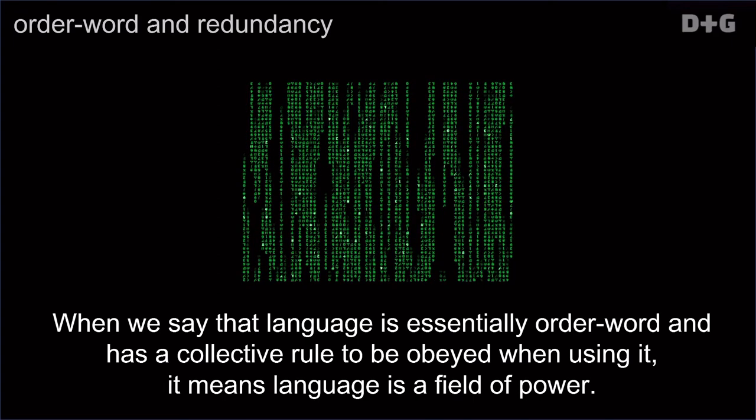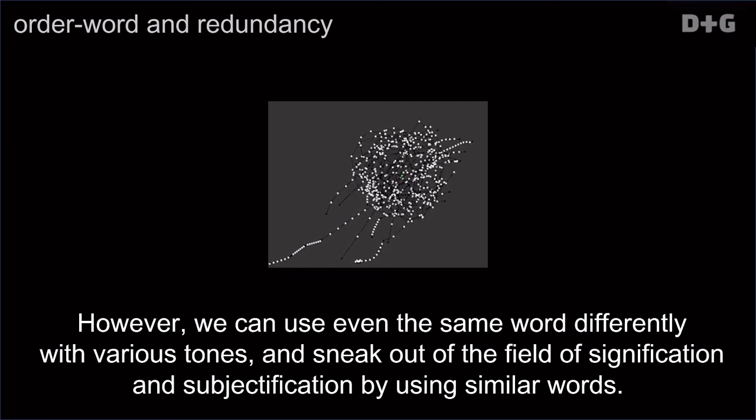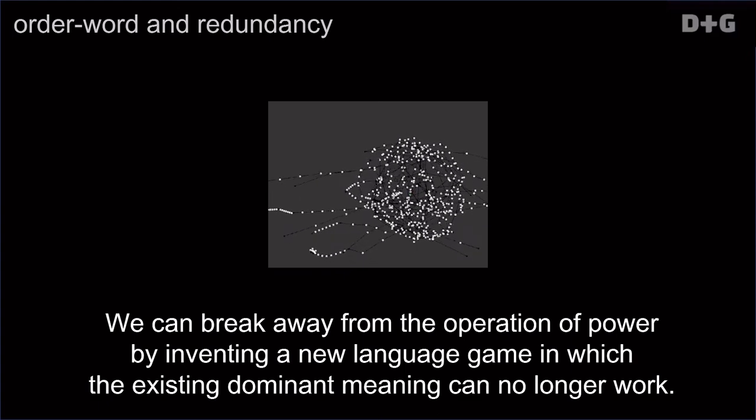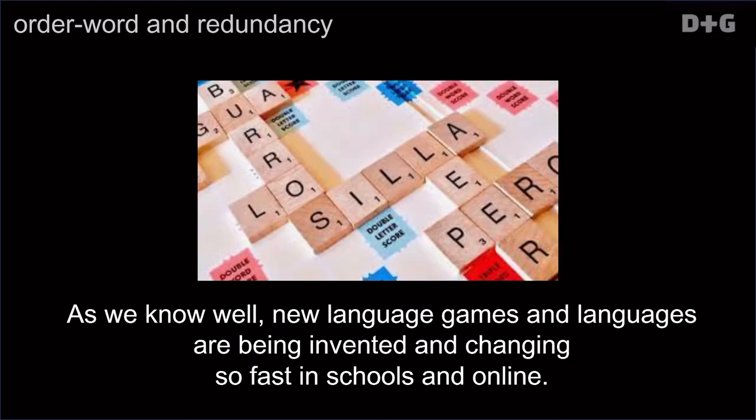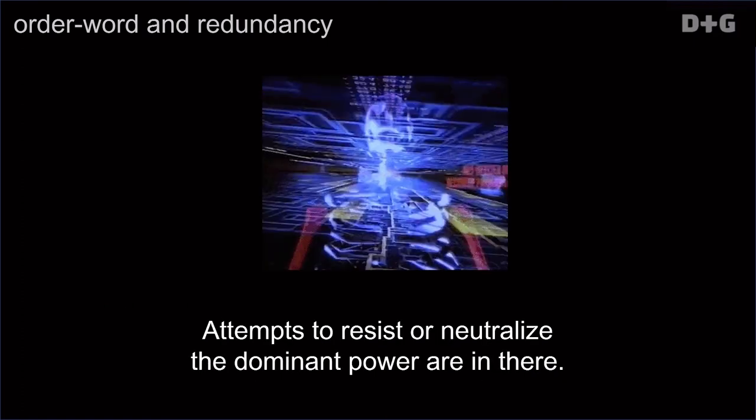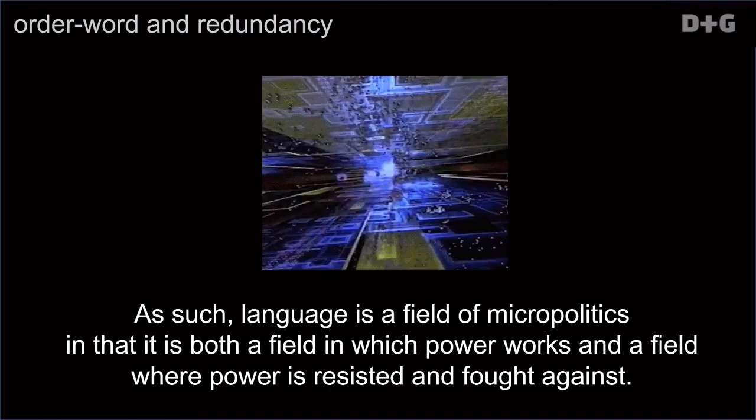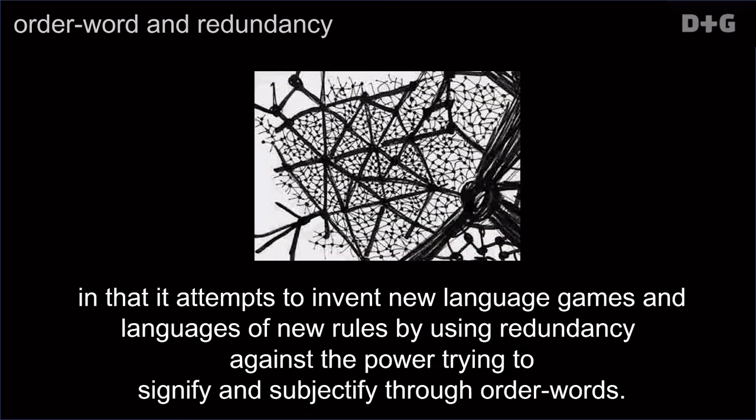When we say that language is essentially order-word and has a collective rule to be obeyed when using it, it means language is a field of power. However, we can use even the same word differently with various tones and sneak out of the field of signification and subjectification by using similar words. We can break away from the operation of power by embedding a new language game in which the existing dominant meaning can no longer work. As we know well, new language games and languages are being invented and changing so fast in schools and online. Attempts to resist or neutralize the dominant power are in there. As such, language is a field of micropolitics in that it is both a field in which power works and a field where power is resisted and fought against. Pragmatics is said to be a micropolitics in that it attempts to invent new language games and languages of new rules by using redundancy against power, trying to signify and subjectify through order words.